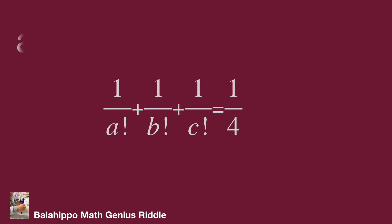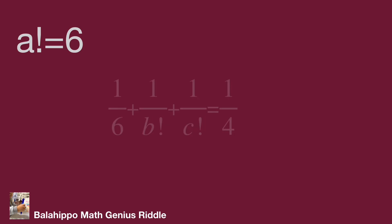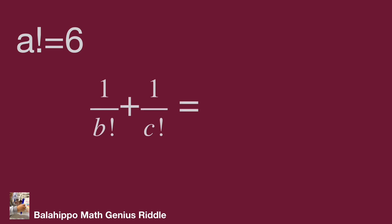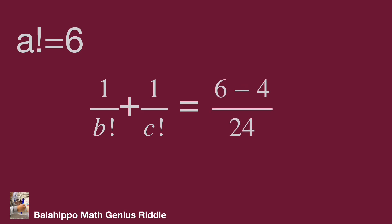When A factorial equals 6, substitute A factorial by 6. The equation becomes 1 over 6 plus 1 over B factorial plus 1 over C factorial equals 1 over 4. So 1 over B factorial plus 1 over C factorial equals 1 over 4 minus 1 over 6. Reducing these two fractions: 6 minus 4 over 24 equals 2 over 24 equals 1 over 12.